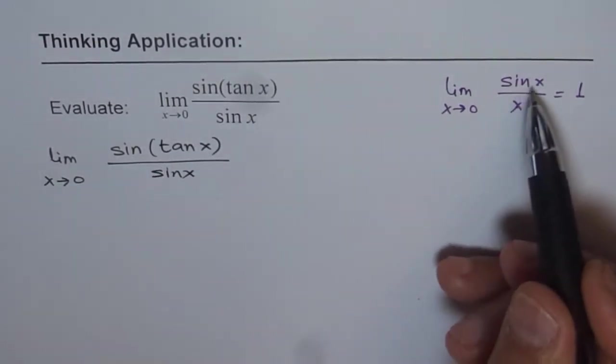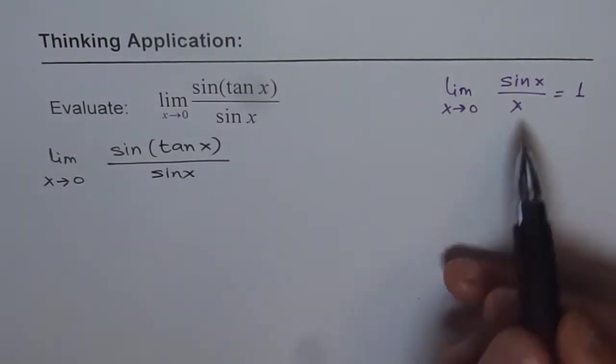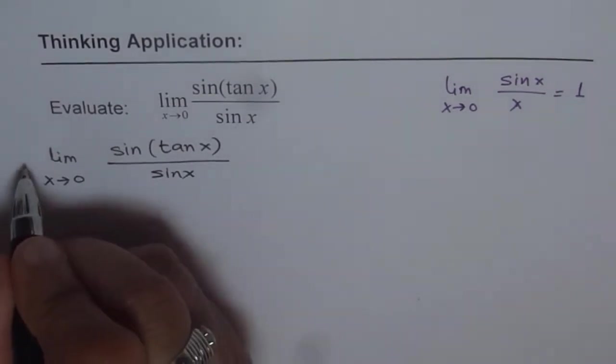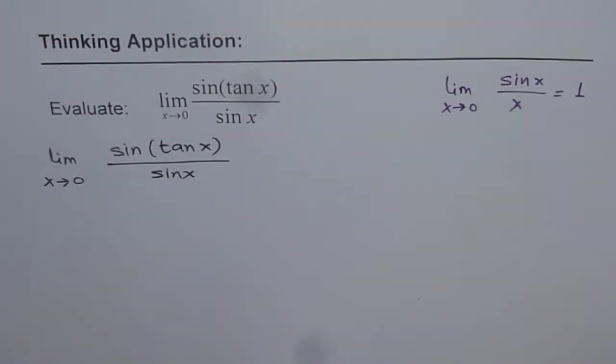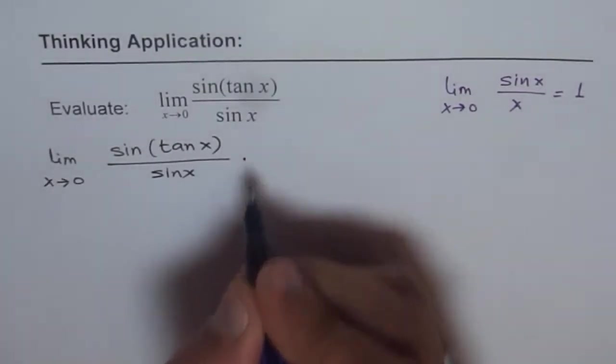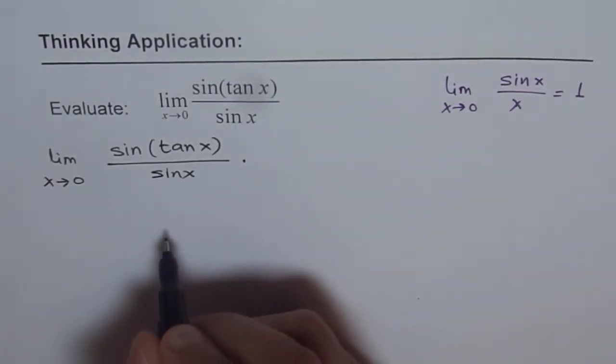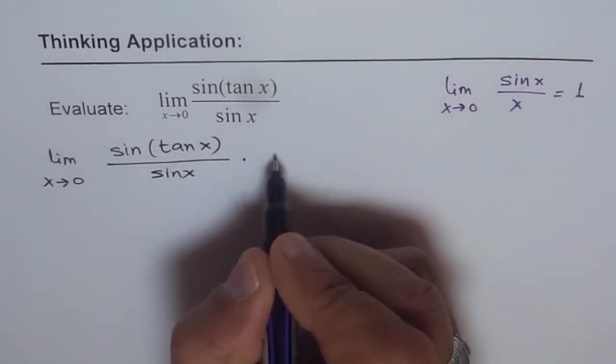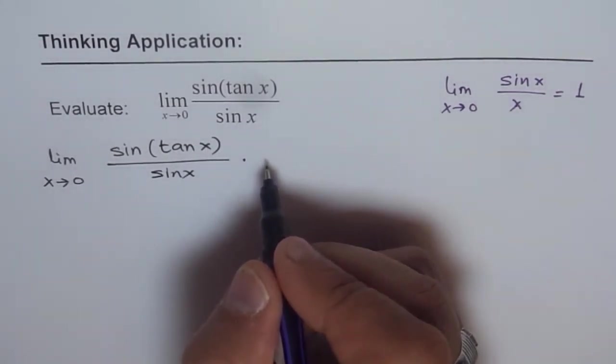So if I have to have something like this, that means I want to have tan x here. Do you see that? How can I have tan x in this place? One way to do it is to multiply and divide by cos x. So if I divide both by cos x,